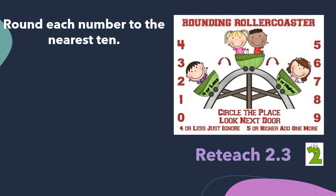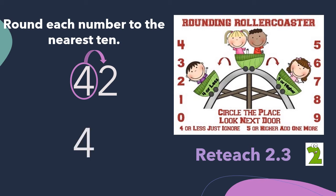Let's look at number two, 42. Circle the place — we're rounding to the tens place, so we'll circle the four. Look next door. We look at the digit to the right. Four or less, just ignore. So that boss digit, that two, tells the four to stay the same. So when I write my rounded number, the digit in the tens place will still be four. And anything to the right of that place is going to become a zero. So 42 rounded to the nearest 10 is 40, because 42 is closer to 40 than it is to 50.